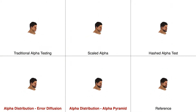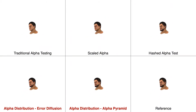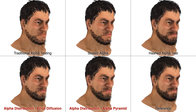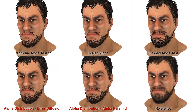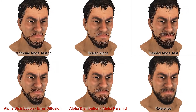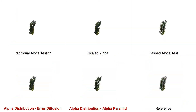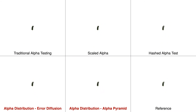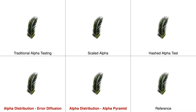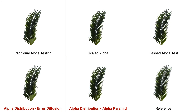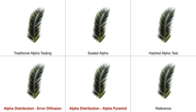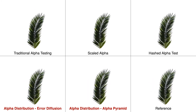Hashed alpha testing solves all problems, but introduces a substantial amount of noise. The two alpha distribution methods described in this paper solve all problems, and they also avoid introducing excessive noise.